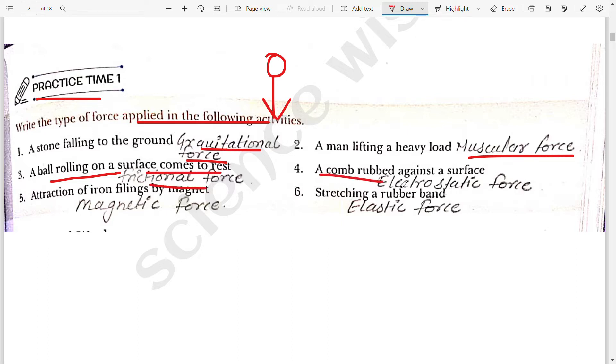Fourth, a comb rubbed against a surface. It is an electrostatic force. Five, attraction of iron filing by a magnet. It is magnetic force. Stretching of rubber band. It is an elastic force.